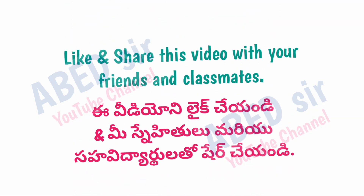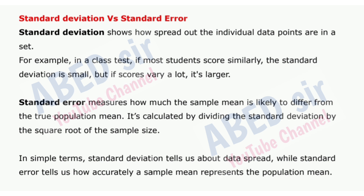Next important short question: Standard deviation versus standard error. Standard deviation shows how spread out the individual data points are in a set. For example, in a class test, if most students score similarly, the standard deviation is small, but if scores vary a lot, it's larger. Standard error measures how much the sample mean is likely to differ from the true population mean — it's calculated by dividing the standard deviation by the square root of the sample size. In simple terms, standard deviation tells us about data spread, while standard error tells us how accurately a sample mean represents the population mean.